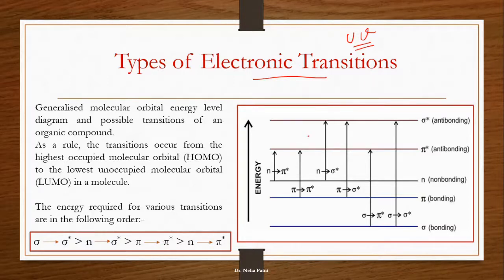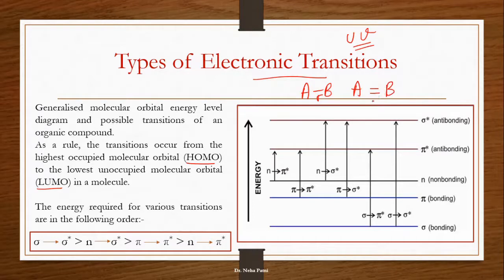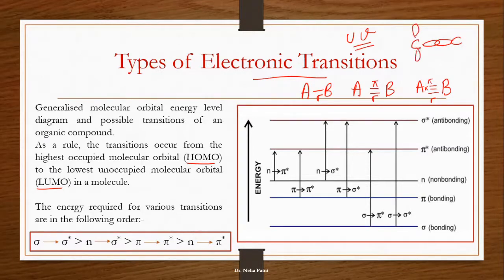Let us start with what we understand by electronic transition. With prior knowledge of HOMO (Highest Occupied Molecular Orbital) and LUMO (Lowest Unoccupied Molecular Orbital), we can start with the transition. If a molecule has a single bond, we consider it a sigma bond. A double bond has sigma and pi, and a triple bond has one sigma and two pi bonds. The sigma bond forms by proper overlap and is a strong bond, while the pi bond forms by lateral overlap and is weaker.